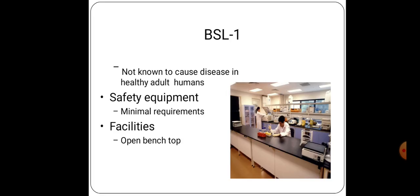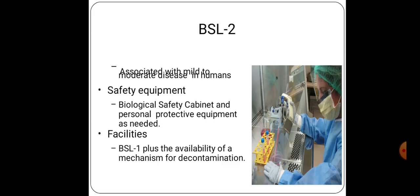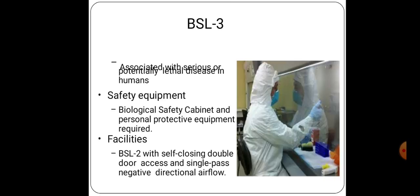BSL-1: not known to cause disease in healthy adults. Safety equipment has minimal requirements. Facilities include open bench tops. BSL-2: associated with mild to moderate disease in humans. Safety equipment includes biological safety cabinets and personal protective equipment as needed. Facilities include BSL-1 plus decontamination mechanisms.